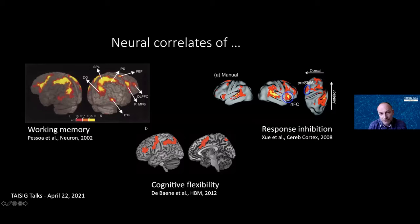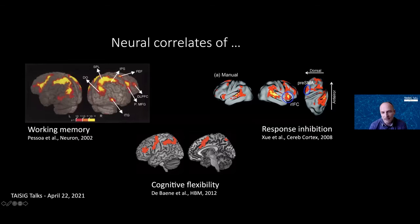Historically, the cognitive neuroscience domain has been dominated by the search for neuro-correlates of all kinds of cognitive processes, and this group-level analysis has shown that specific regions have been involved in working memory, response inhibition, cognitive flexibility, and so on.